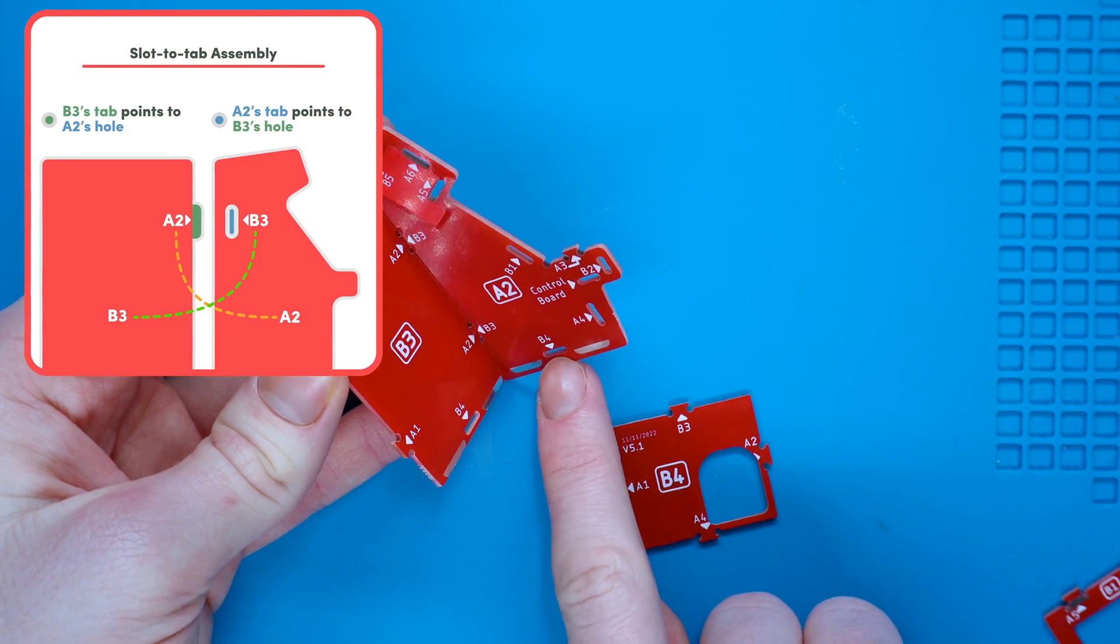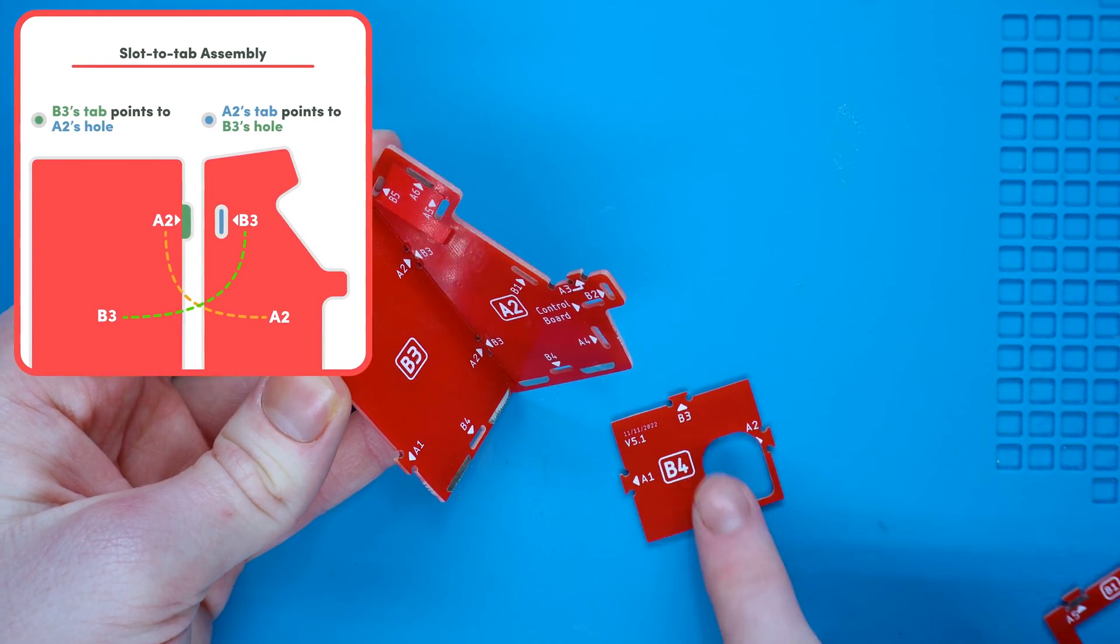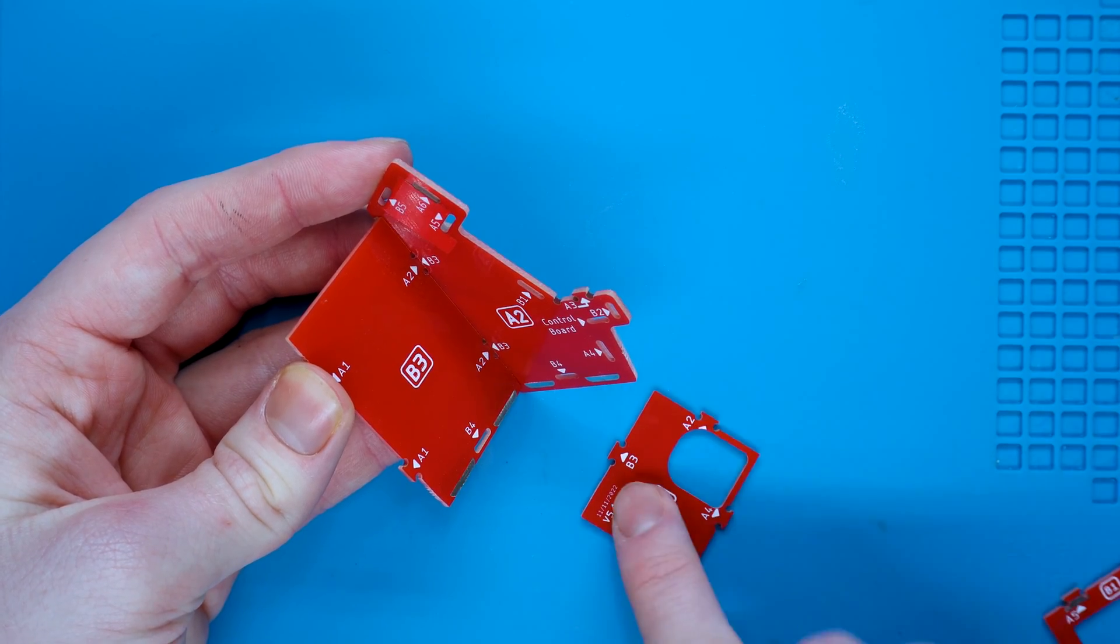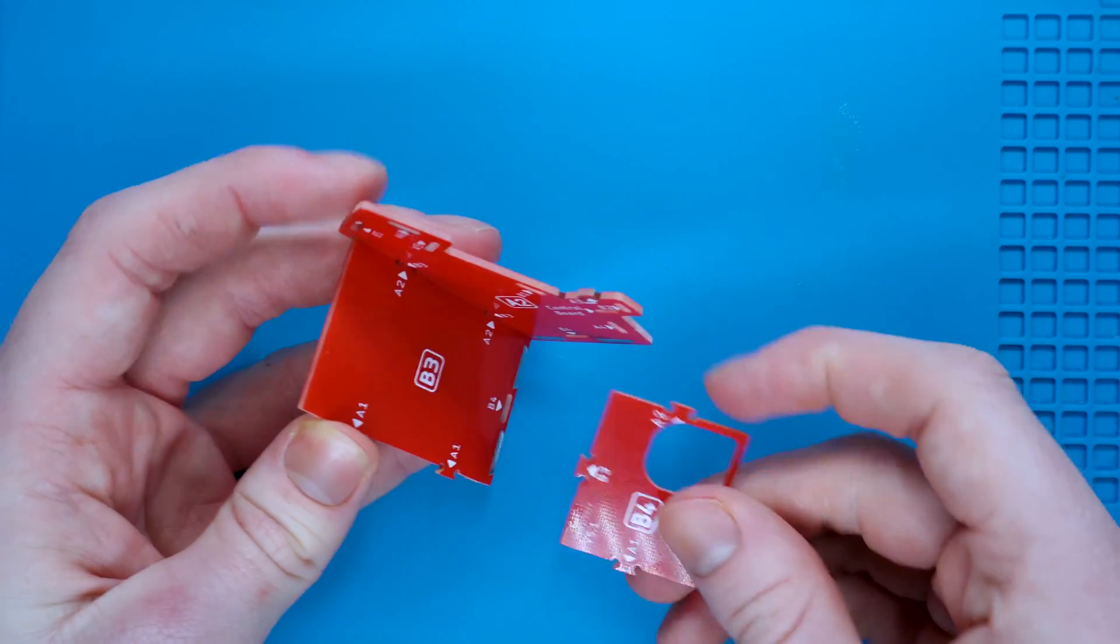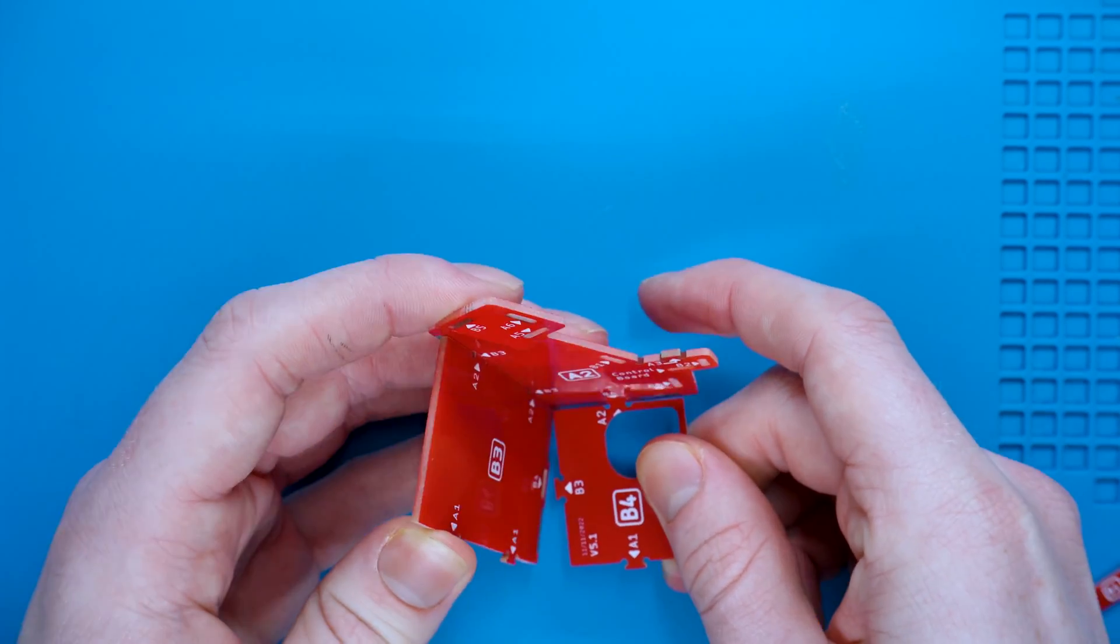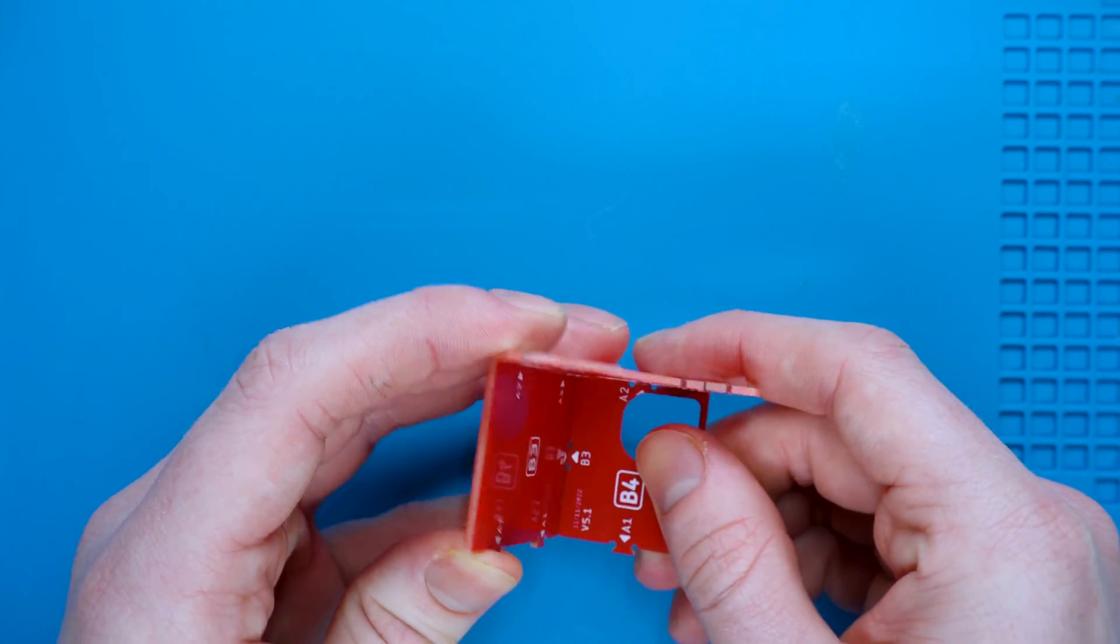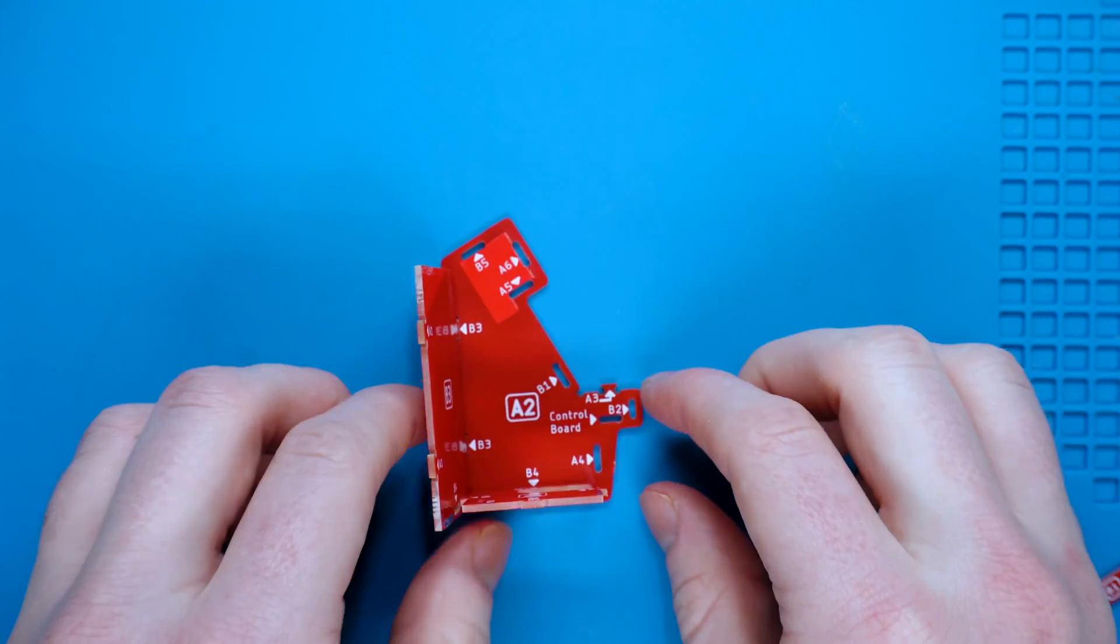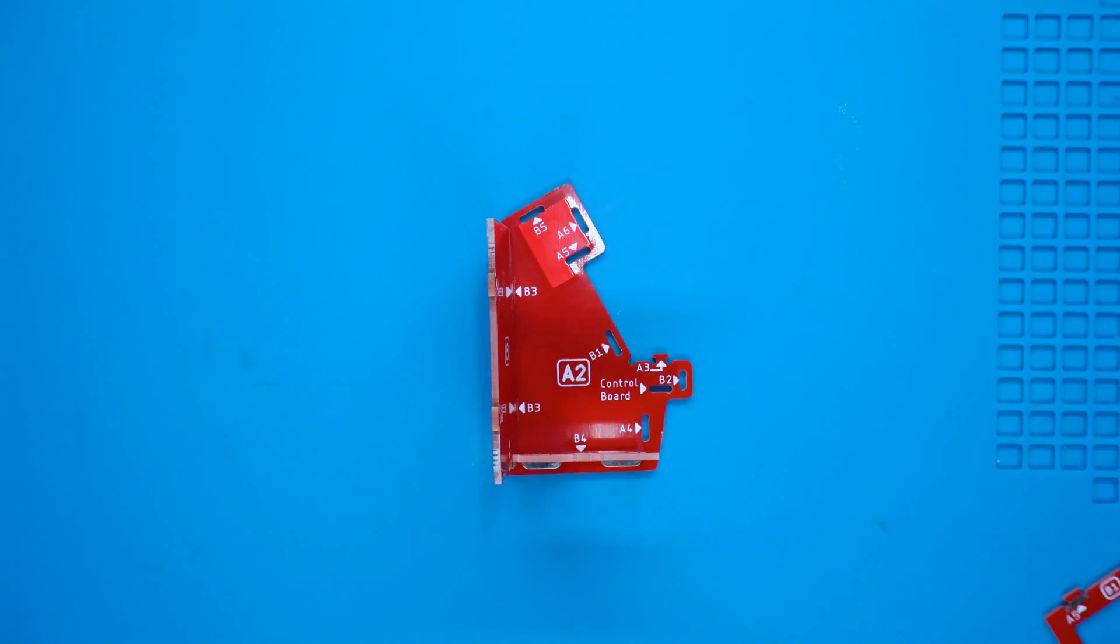When we grab B4, which is the lower panel, we can see that A2 and B3 are written so we can get the correct orientation like so. It's kind of like a 3D puzzle if you like. Using this metric we can actually assemble the console without instructions, but I'm going to talk you through how to do it anyway.